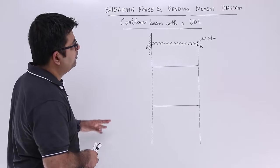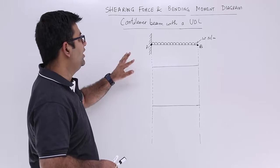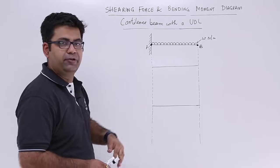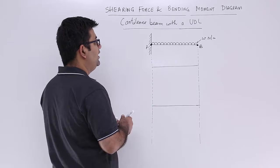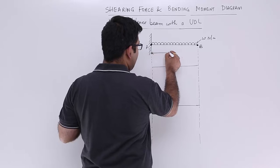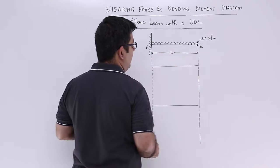Now let us look at a cantilever with a UDL. So this is how it looks like: you have a cantilever with a UDL of W newtons per meter. The length of this cantilever is L.